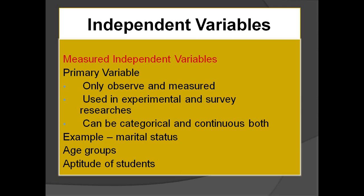The next type of independent variable is measured independent variables. These are also of primary interest, but we cannot manipulate them — we only observe or measure them. These variables can be used in experimental or survey research and can be categorical or continuous. For example, marital status, age groups, or aptitude of students. If we want to measure the level of job satisfaction in married versus unmarried individuals, marital status is a measured independent variable — we only observe or measure it.